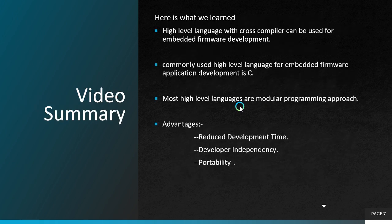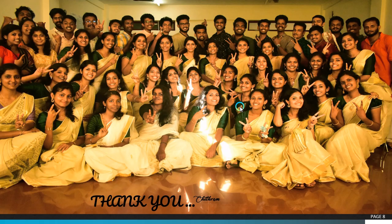What we have learned in this tutorial: high level language with a cross compiler can be used for embedded firmware development, the most commonly used high level language is C, and most high level languages support modular programming. We discussed the high level language to machine language conversion process, and the three advantages of high level language based development: reduced development time, developer independency, and portability. This is all about this tutorial on high level language based development. Thank you all.